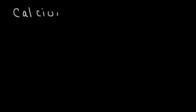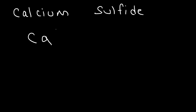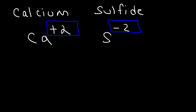Calcium sulfide: calcium is an alkaline earth metal found in group 2A of the periodic table, so it has a positive two charge. Sulfide has a minus two charge. Because the charges are the same you can simply write them together with no subscripts, so it's simply CaS — calcium sulfide.